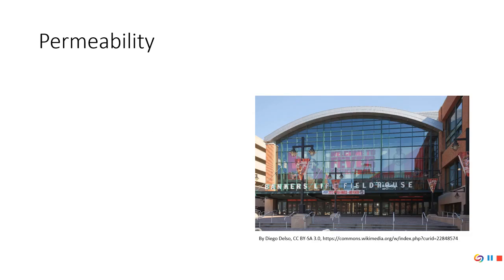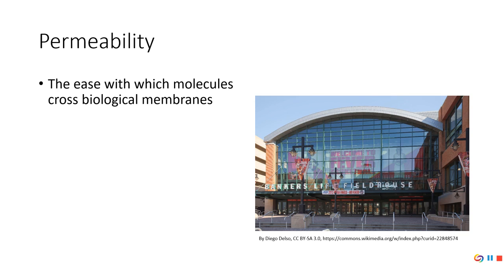This leads us to permeability. Permeability is the ability for something to pass through the cell membrane. Here we've got Banker's Life Fieldhouse, which holds around 18,000 people. Let's say there's one door and 18,000 people waiting to get in to see the Lakers play the Pacers in game seven. If there's only one door open, all 18,000 people could get in, it would just take a very long time. Contrast that with 18,000 doors — when those doors open, everybody can get in very quickly because the permeability has increased.